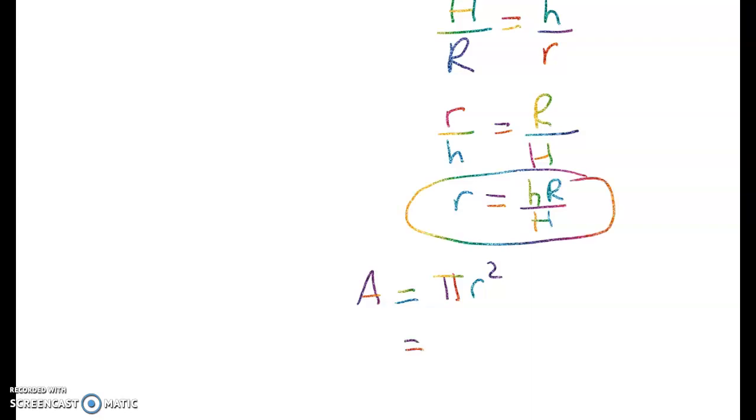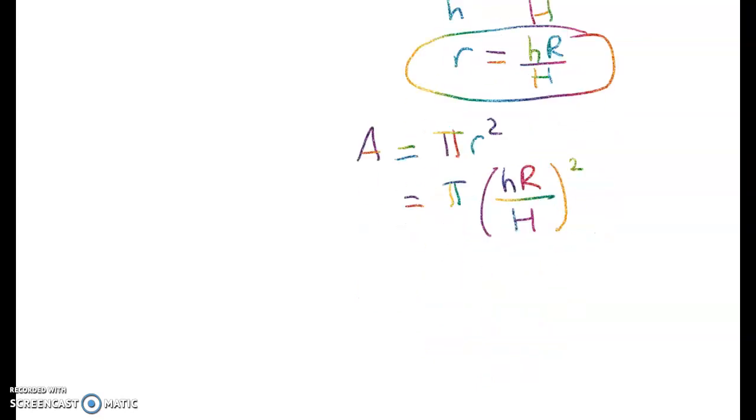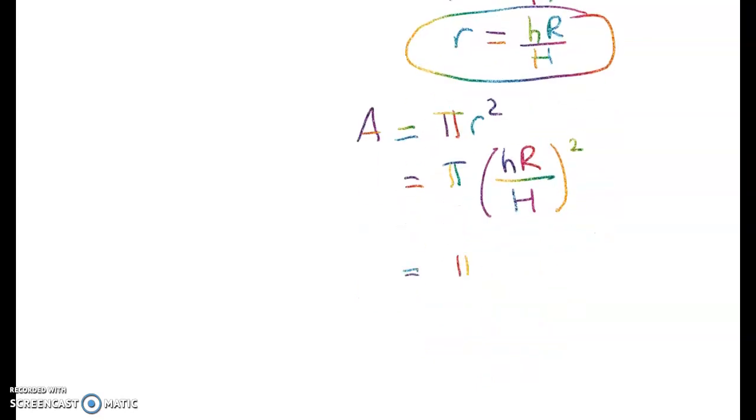So I'm going to take this and substitute it in. So we get pi times this. Now this still looks messy but we kind of know that lots of things will probably simplify out when we do our integration. And that's what's going to happen. So we get pi h squared big R squared over big H squared.